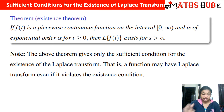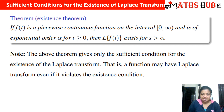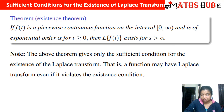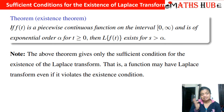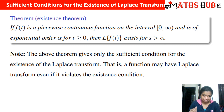In a nutshell, the theorem states: if f(t) is a piecewise continuous function on the interval 0 to infinity and is of exponential order alpha, then the Laplace transform of f(t) always exists for s > alpha. Note that these are sufficient conditions, not necessary conditions — a function may have a Laplace transform even if it violates these conditions.